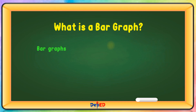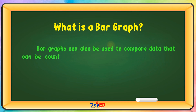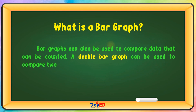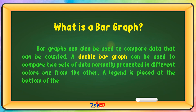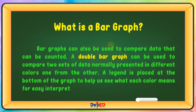Bar graphs can also be used to compare data that can be counted. A double bar graph can be used to compare two sets of data, normally presented in different colors. A legend is placed at the bottom of the graph to help us see what each color means for easy interpretation of data.